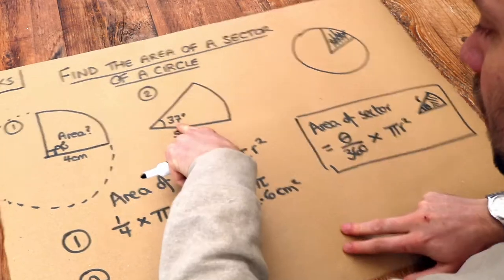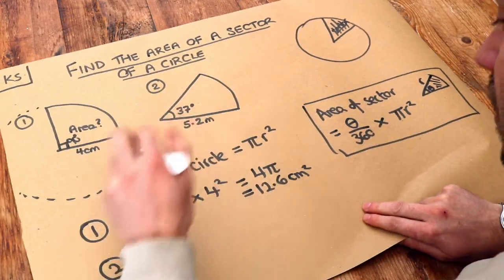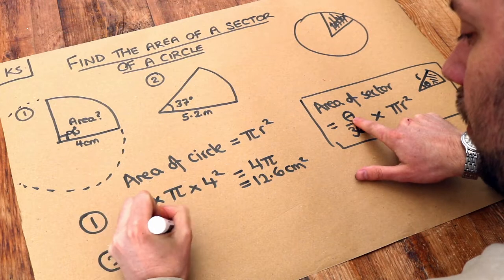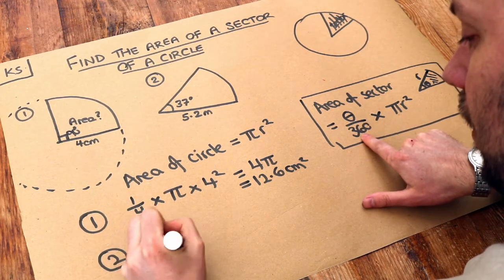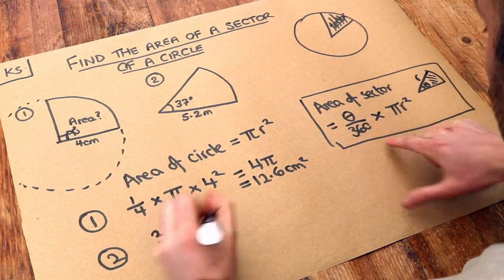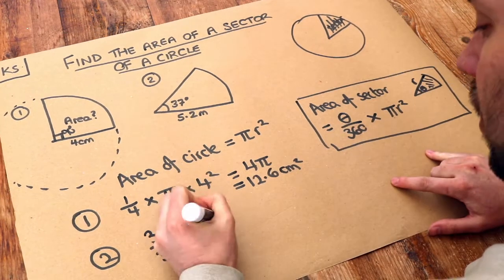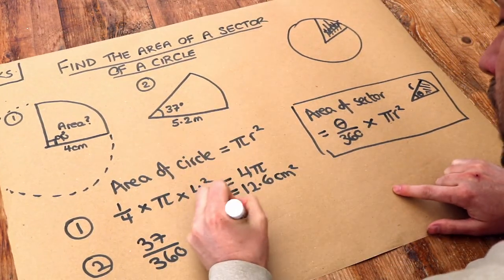We've got θ over 360, θ is the angle at the centre here of the circle, so it's 37 over 360. Then we're timesing it by π times r squared, so π times the 5.2 squared.